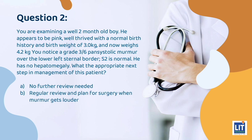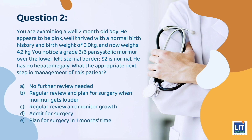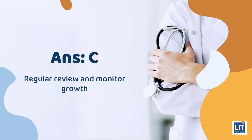Question 2: You are examining a well 2-month-old boy. He appears pink and well-thrived, with a normal birth history and birth weight of 3kg, now weighing 4.2kg. You notice a 3/6 pan-systolic murmur over the lower left sternal border. S2 is normal and he has no hepatomegaly. What is the appropriate next step in management? The answer is C — regular review and monitoring of growth.